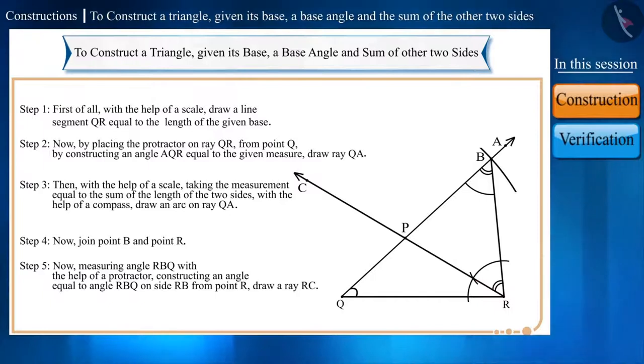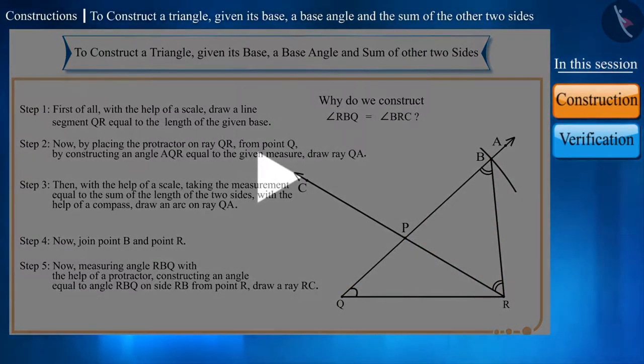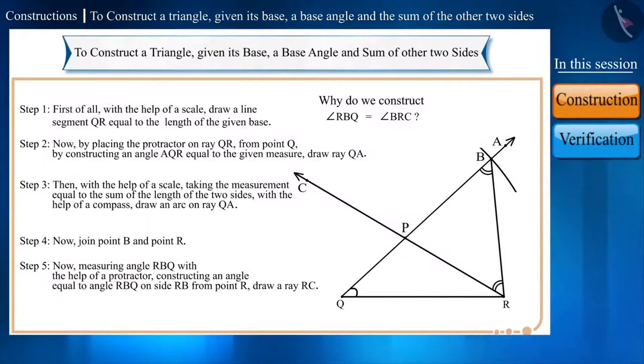Friends, pause the video and think, why do we construct angle RBQ equal to angle BRC? We need side PR equal to side PB. Therefore, we construct the isosceles triangle for which two angles need to be equal. Hence, in the constructed figure, triangle PQR is the required triangle which we wanted to construct.